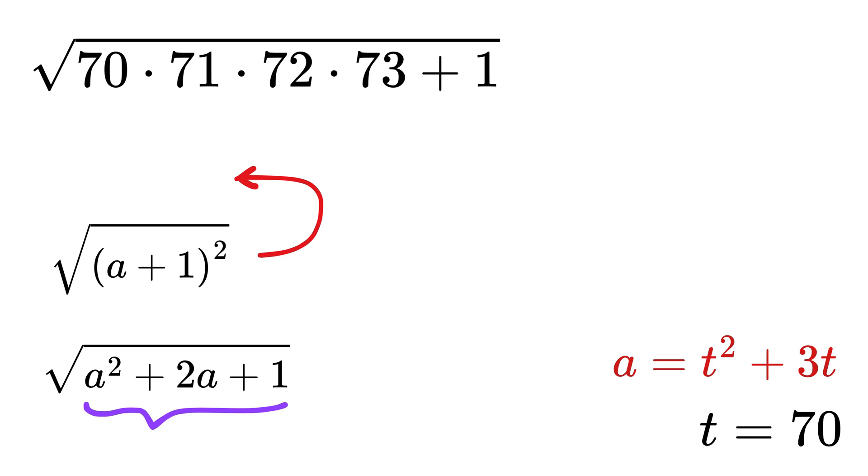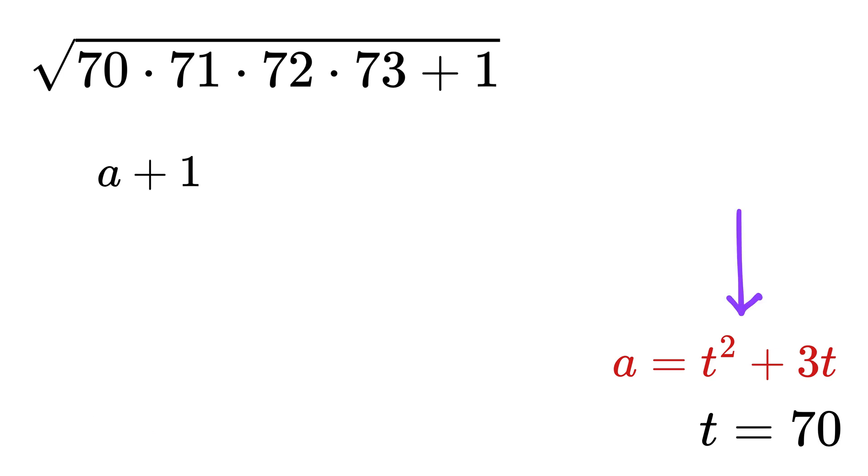So finally, square root of a plus 1 whole squared gives just a plus 1. Now recall that a was t squared plus 3t, so the final result is t squared plus 3t plus 1.